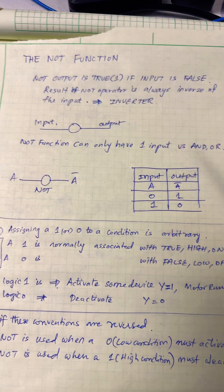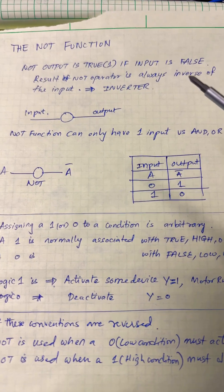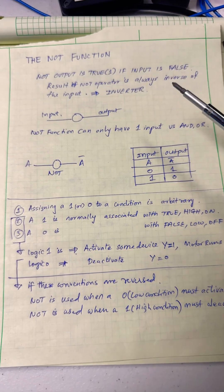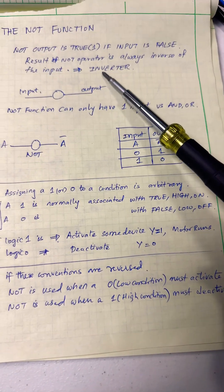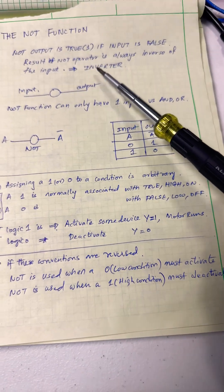Welcome back to Ready Controls. In this short video, we're going to talk about NOT functions. The NOT function is true if input is false. Technically, the NOT function is called an inverter because the output is always the inverse of the input.